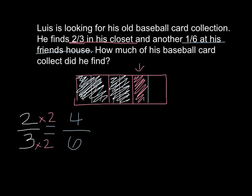So now I know that I actually added four-sixths plus one-sixth. If I count them out, I have one, two, three, four, five, six. I was able to show it both with a diagram as well as with adding fractions using a common denominator.